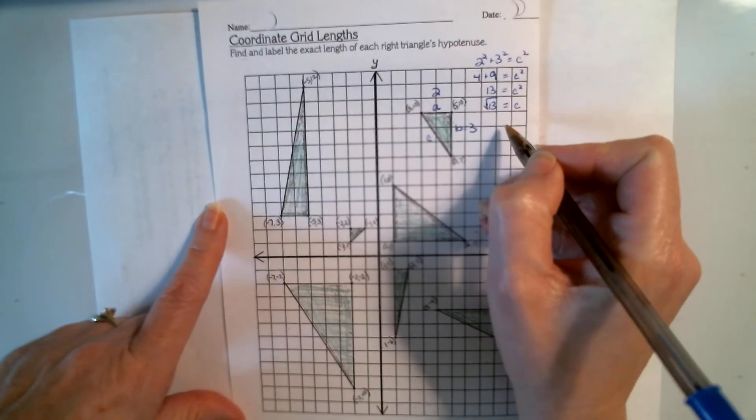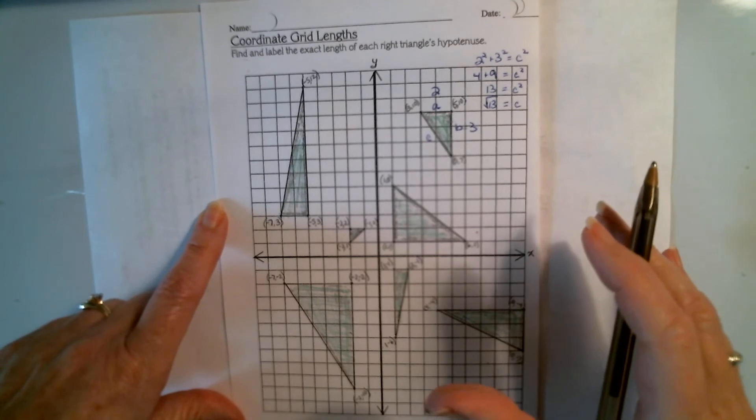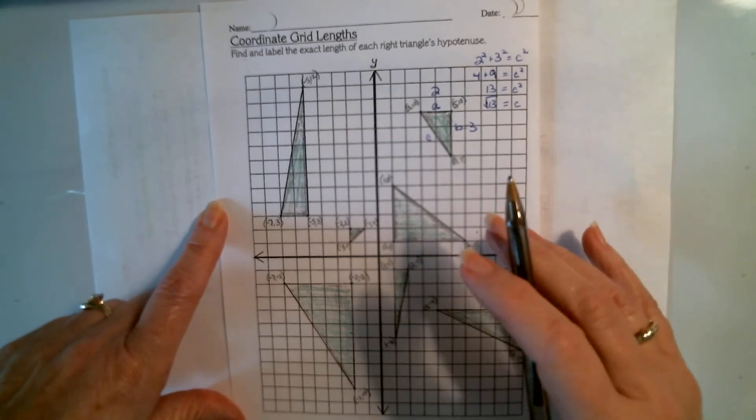Now, we spent some time approximating, well, what is that? We know it's somewhere between 3 squared and 4 squared or 9 and 16.